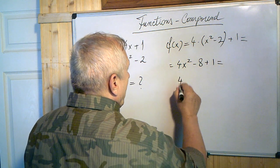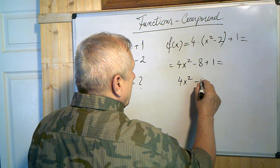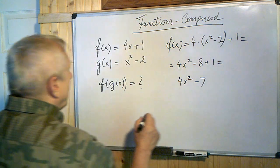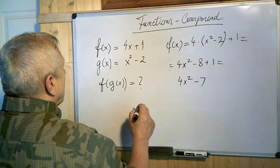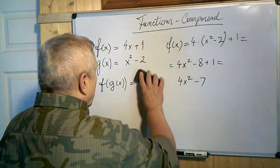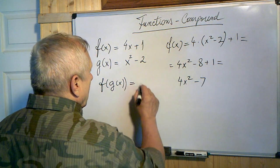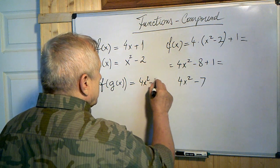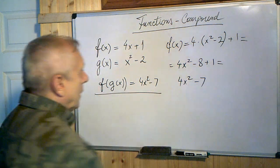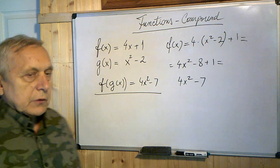That is 4x squared minus 7. Okay. So that's it. Basically, that's the one. 4x squared minus 7. Not difficult at all. Thanks.